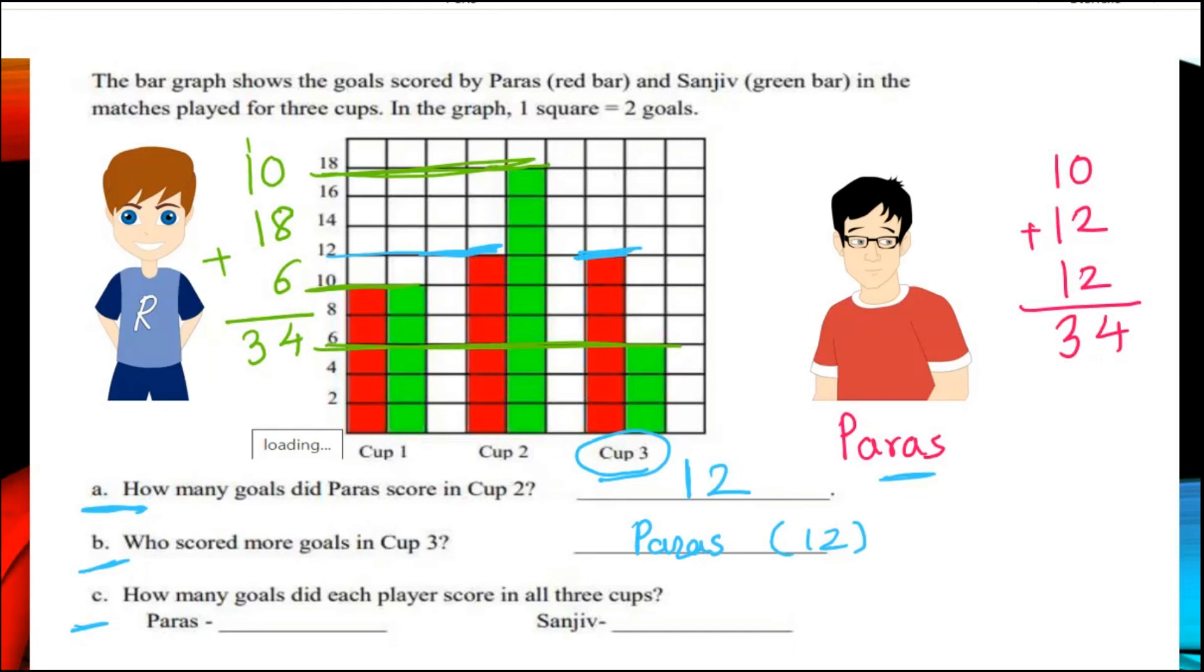Let us solve third question. How many goals did each player score in all 3 cups? Means all 3 matches total we have to write down. And as we have calculated, Paras achieved 34 and Sanju achieved also 34. Means both achieved equal.